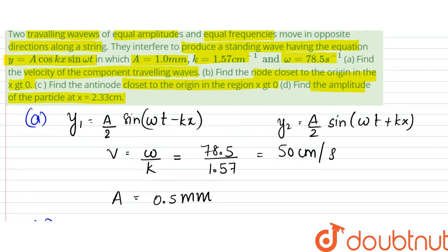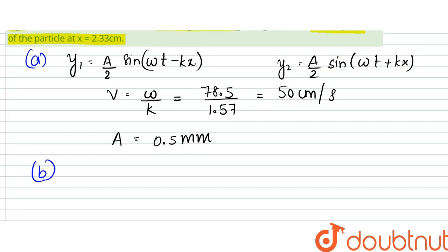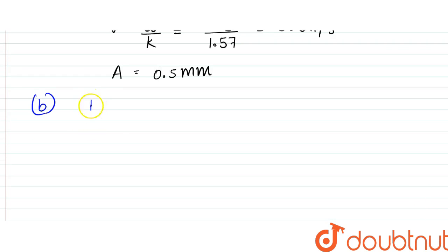Now, B, we are asked to find the node closest to the origin. So, for nodes, for getting nodes, the condition is cos kx to be equal to 0.